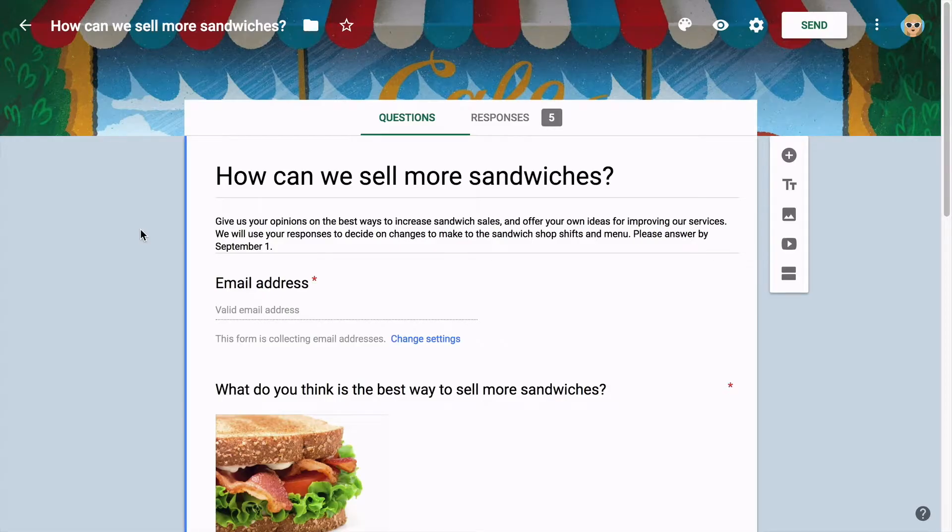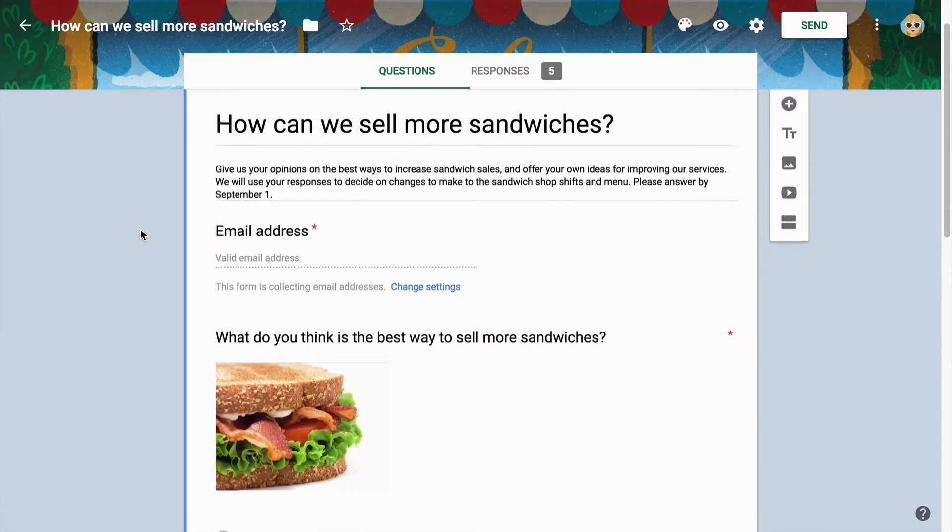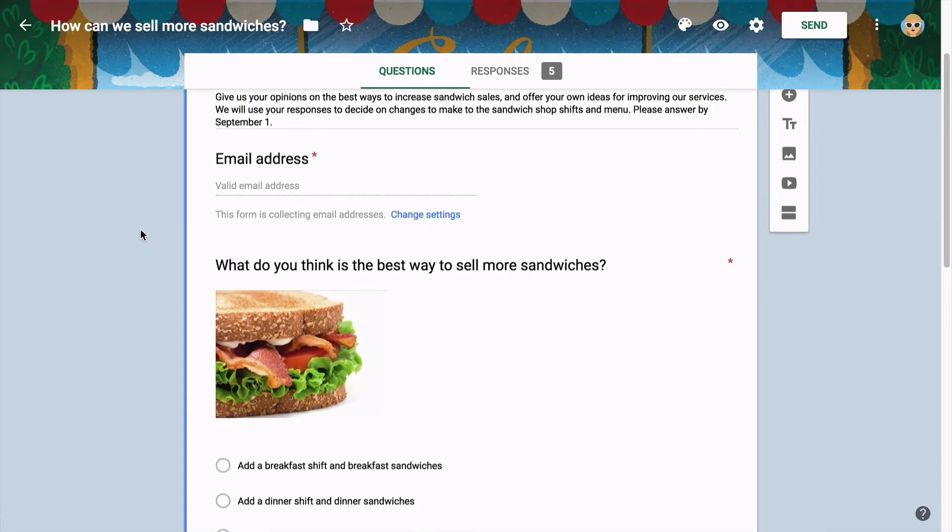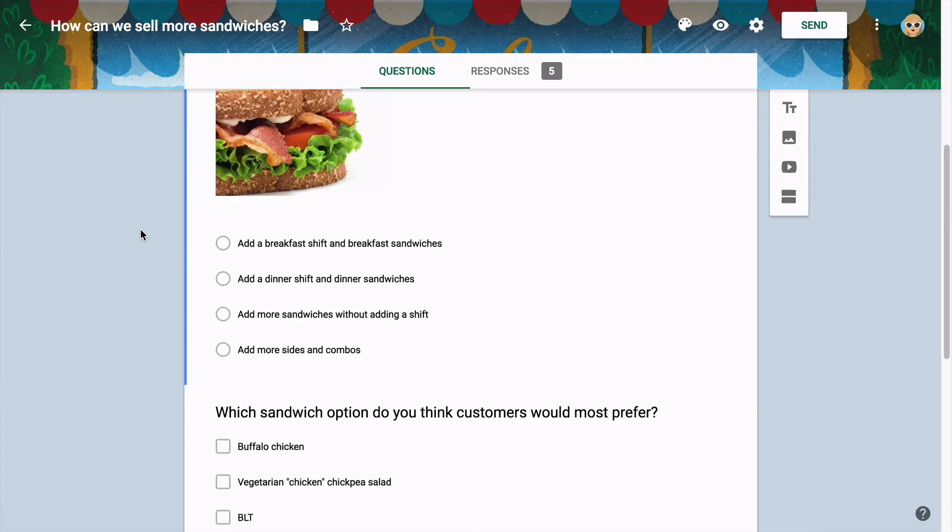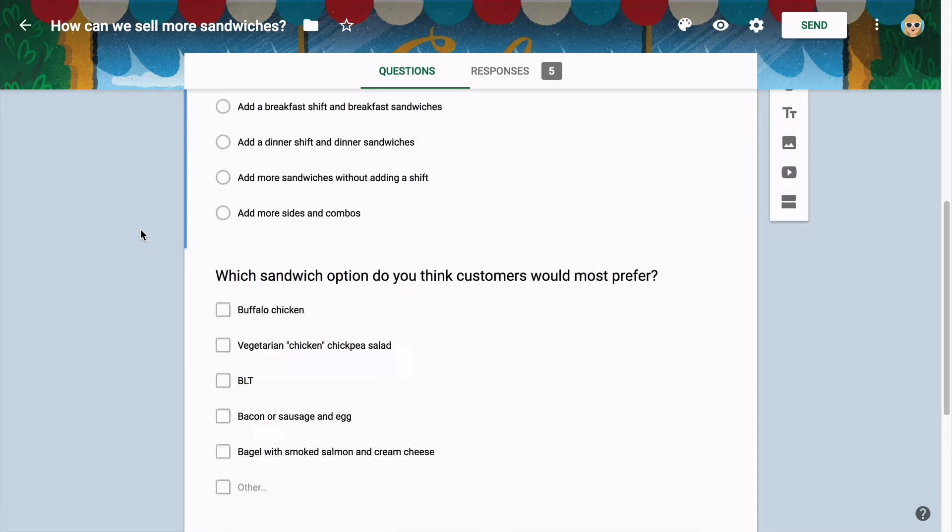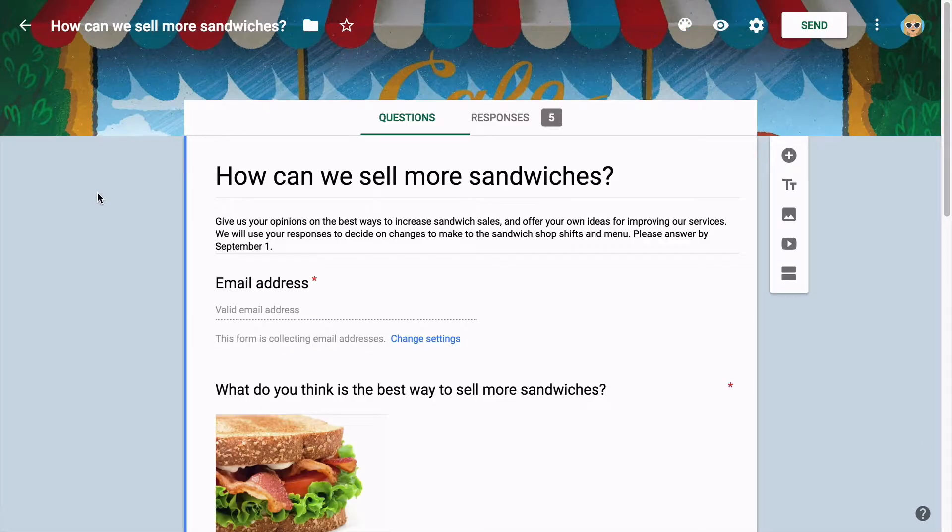In this activity, you'll use Google Forms to create a survey that will ask for feedback. To collect feedback, you'll create a new Google Form, add different types of survey questions, make your survey look professional and appealing by adding a theme, share your survey, and view survey responses.